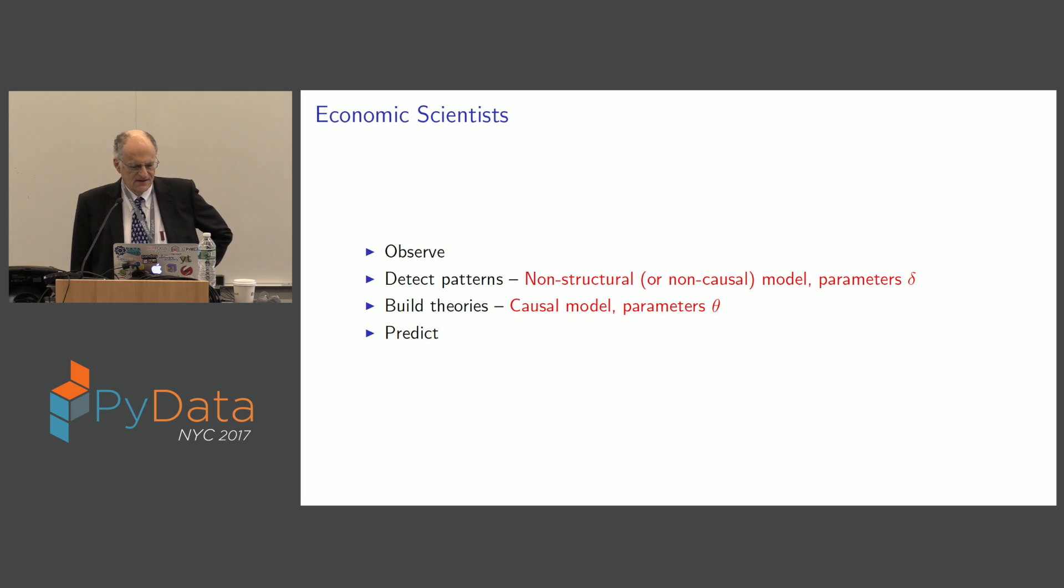So economic scientists, you observe, you detect patterns. So I'm going to say detecting patterns, that's fitting a non-structural or non-causal model and it's got some parameters delta. I'm going to call those non-structural parameters. And we use Python and pandas and scikit-learn to do that. That's an essential step. You build theories. And both your pattern recognition and your theories, they're both models, but they have different parameters, theta. I'm going to call those causal parameters.